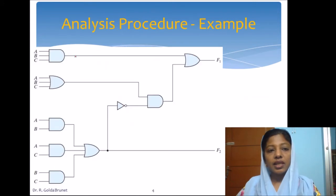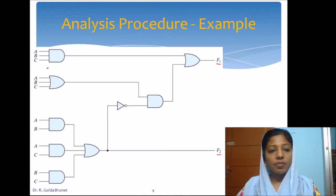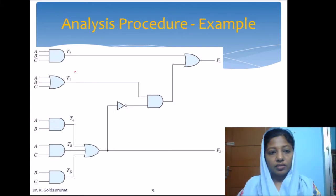Let's consider an example. This is the circuit given to us. There are two output functions, F1 and F2, which we need to find. To start, step one is to label the output of each gate which is accepting inputs directly. We will be labeling this AND gate, this OR gate, and these AND gates. The order of the labels doesn't matter.